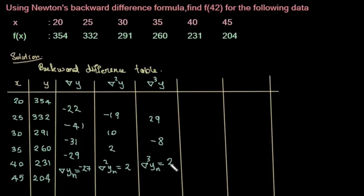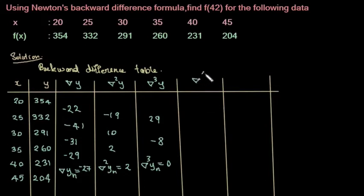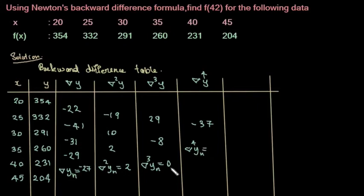2 minus 2 is 0. Next, ∇⁴y. So here, minus 37. ∇⁴yₙ equal to 0 minus minus 8, which is plus 8.